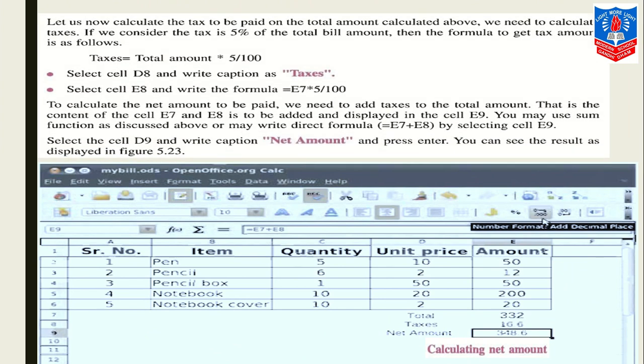Let us now calculate the tax to be paid on the total amount calculated. Let's see how to calculate the tax. We need to calculate taxes. If we consider the tax only is 5% of the total bill amount, then the formula to get the tax amount is as follows: tax equals total amount into 5 by 100. Select cell D8 and write the caption as 'Tax' here. And here we are calculating the tax. Select cell E8 and write the formula: equals to E7, because we are calculating tax on the grand total which is in E7. E7 into 5 by 100.